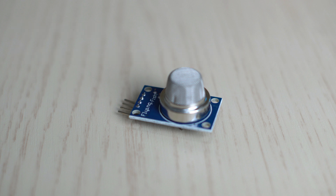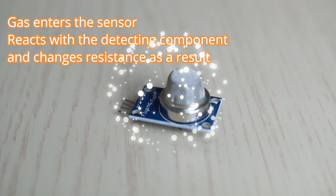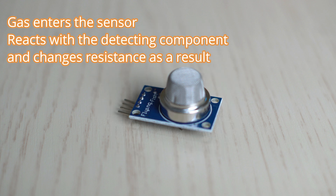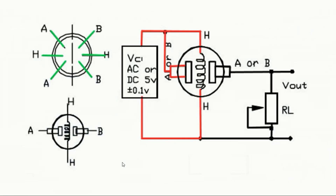The MQ2 gas sensor operates under the premise of a chemical reaction. Target gases enter the sensor and react with the detection component, changing resistance as a result. A voltage signal that can be read by a microcontroller or other electrical device is then created from the resistance change.